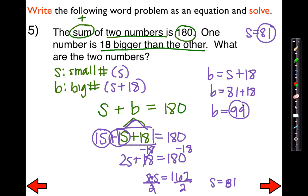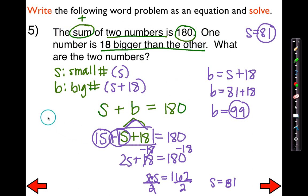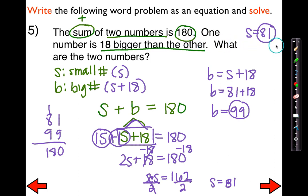One thing I like to do is check to see if these numbers work for what's being asked. Is one 18 bigger than the other? Yes. Do these two numbers add up to 180? What's 81 plus 99? Do they equal 180? Yes. So I'm going to go with the answer that the two numbers are 81 and 99.